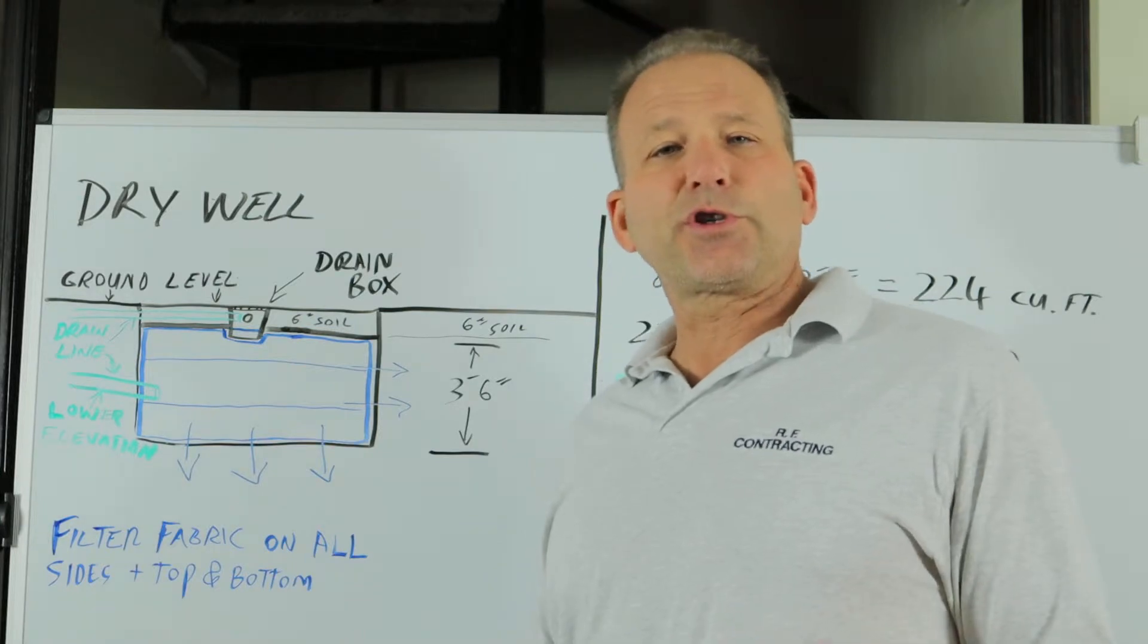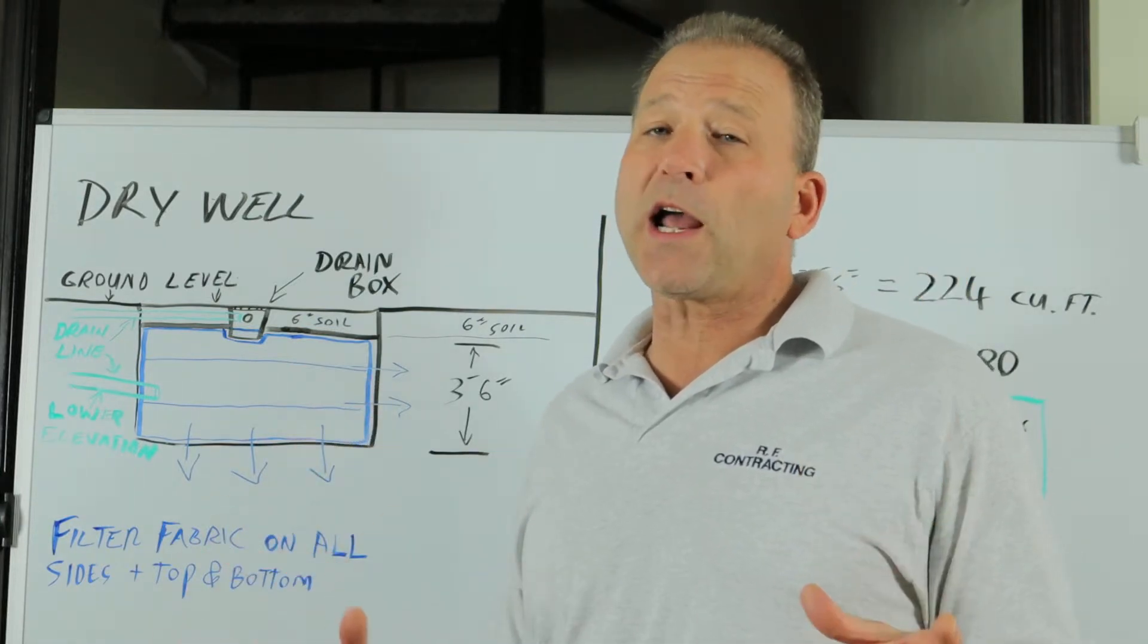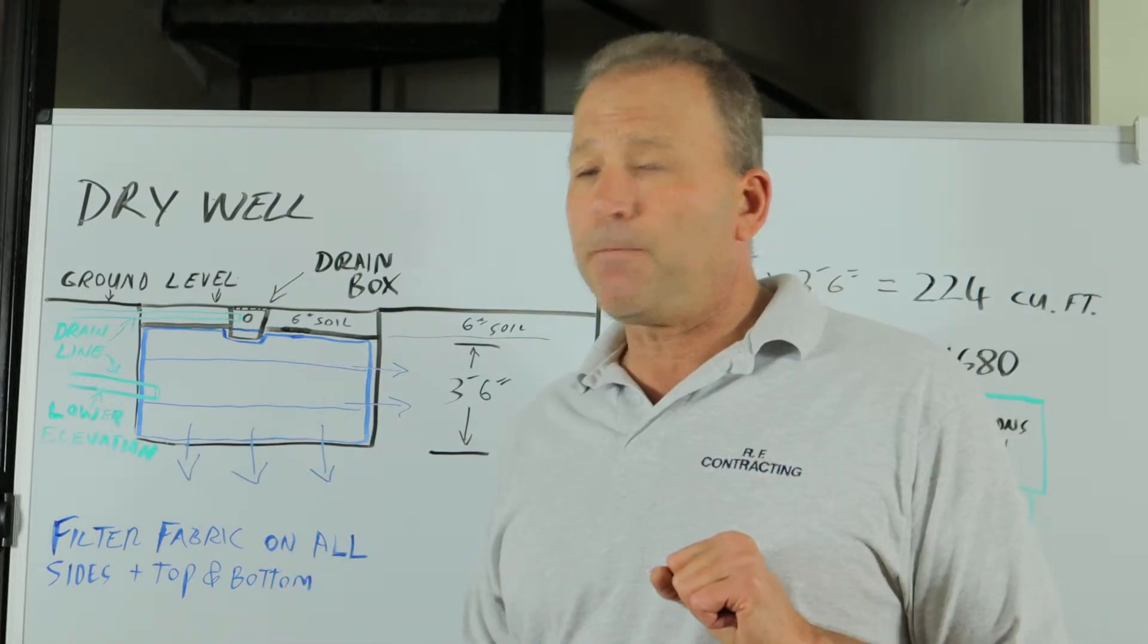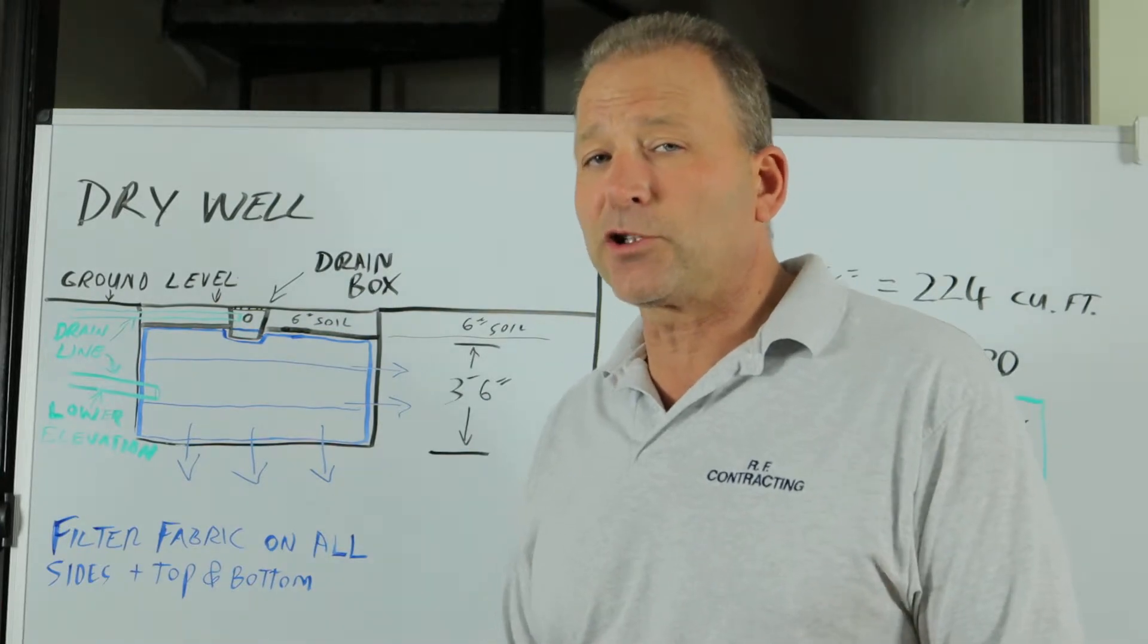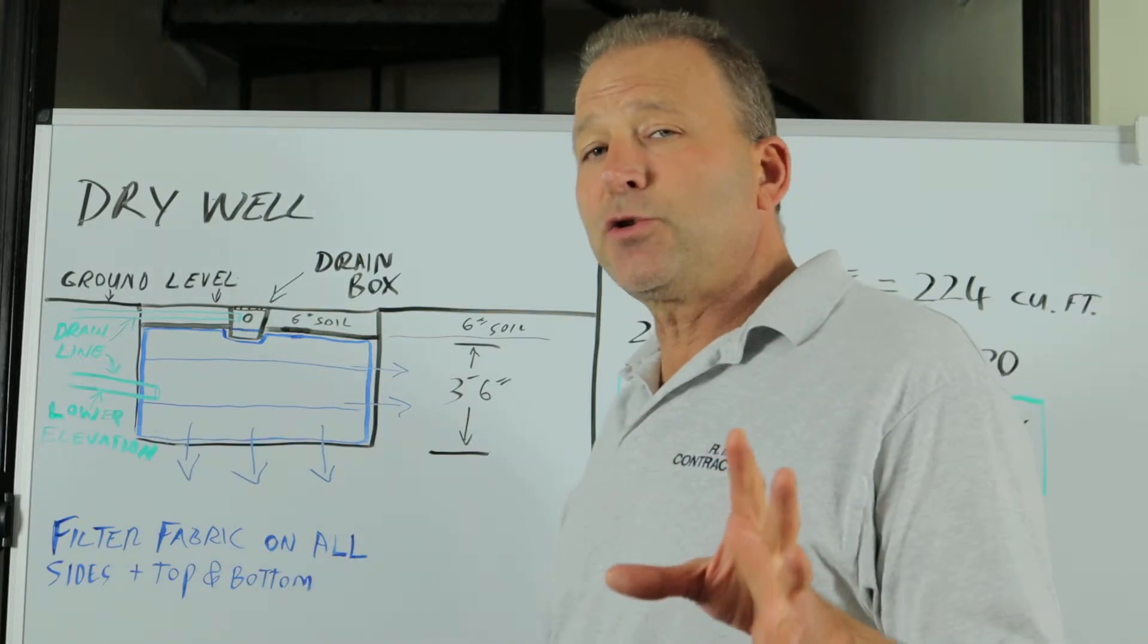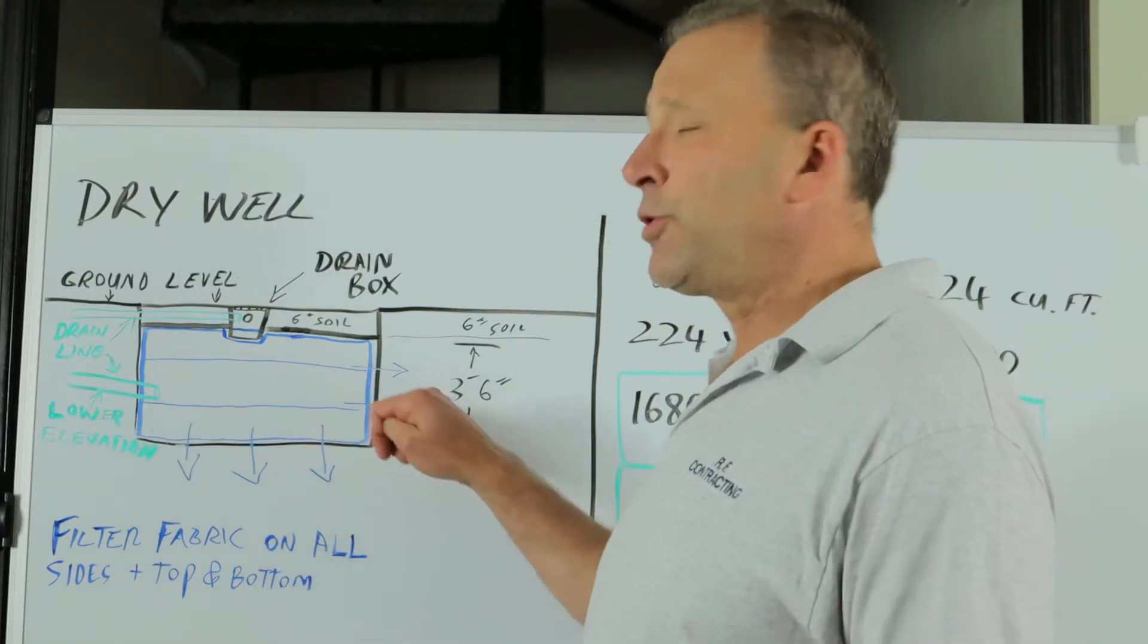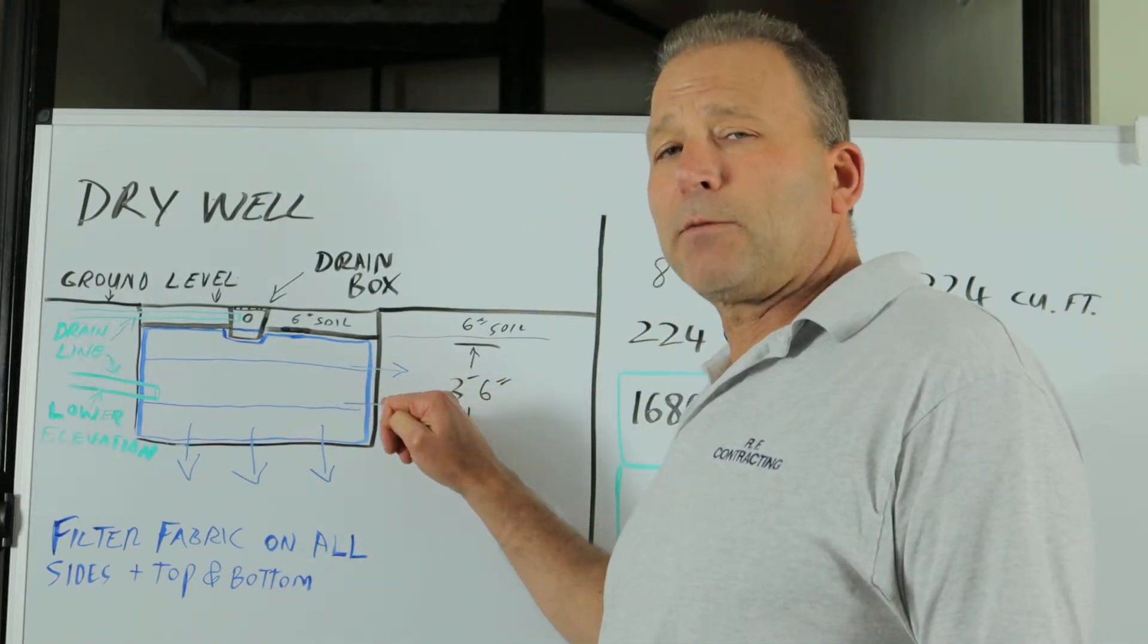Now there are a couple tricks you can use to get more longevity out of the life of your dry well. If you do it right, it'll last 20 to 30 years, and that is to add more layers of filter fabric when you're installing your dry well. In this illustration I have, in addition to all sides plus top and bottom, another layer of filter fabric about two-thirds of the way down and another one about one-third of the way down.